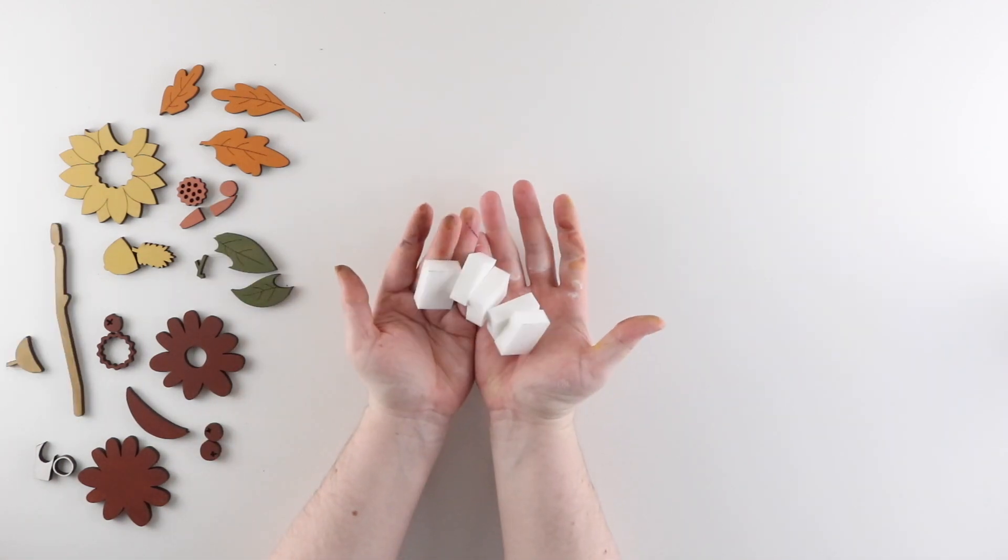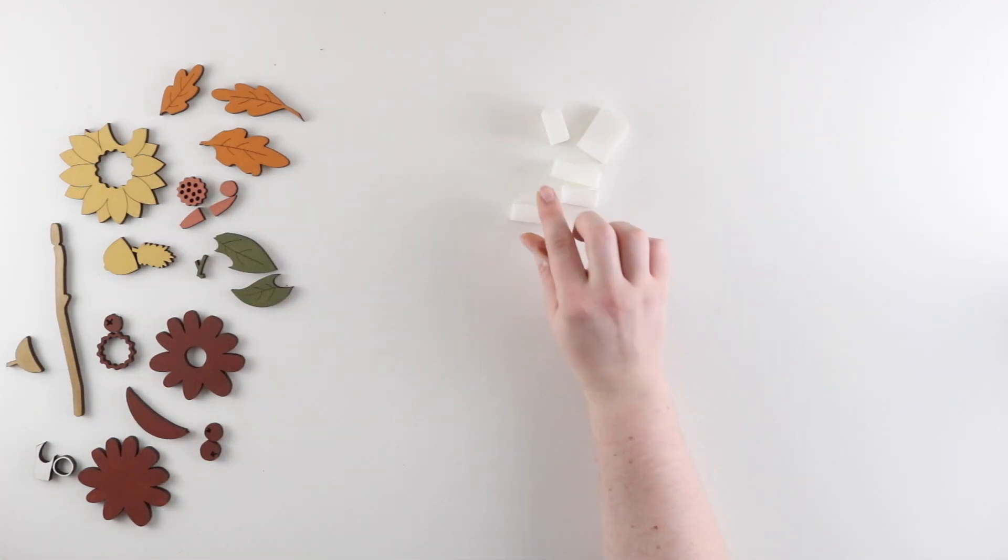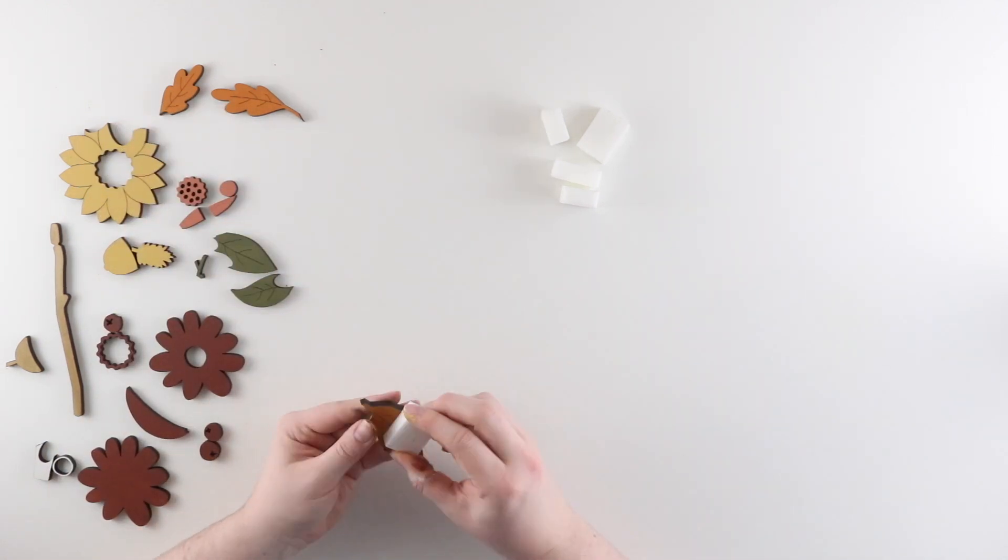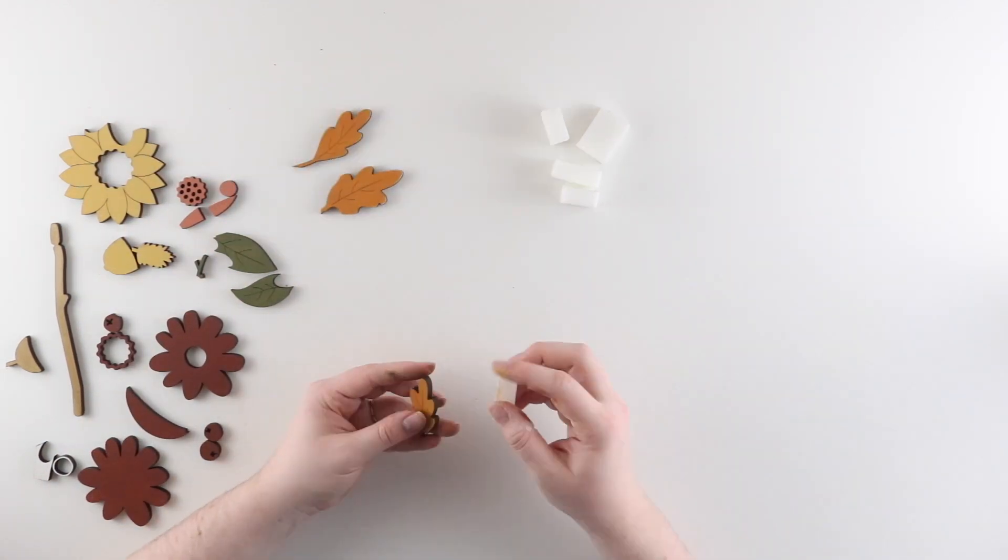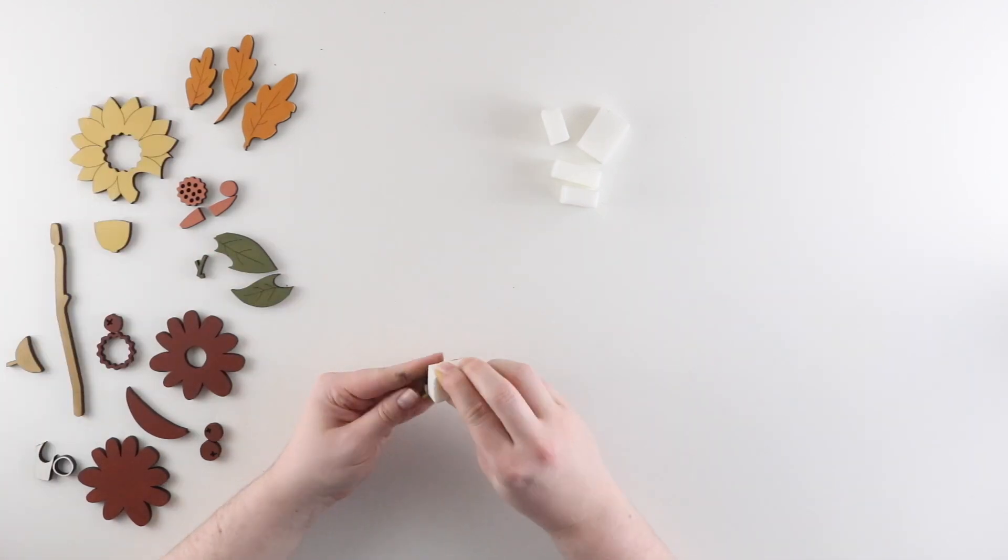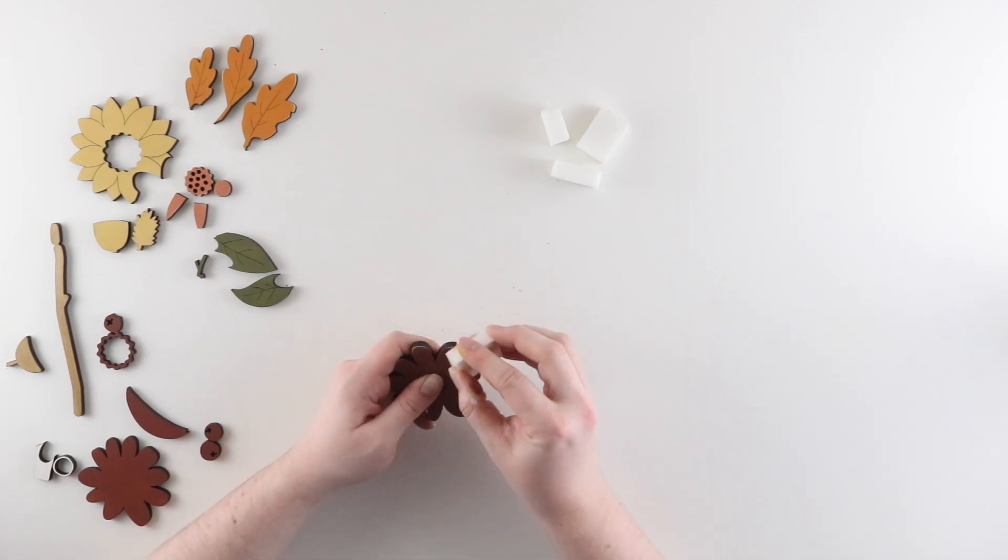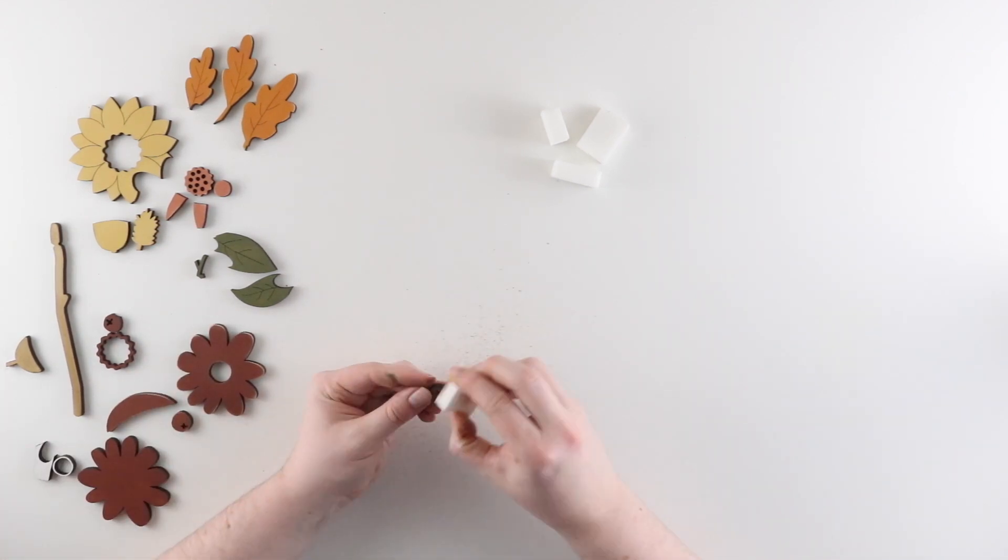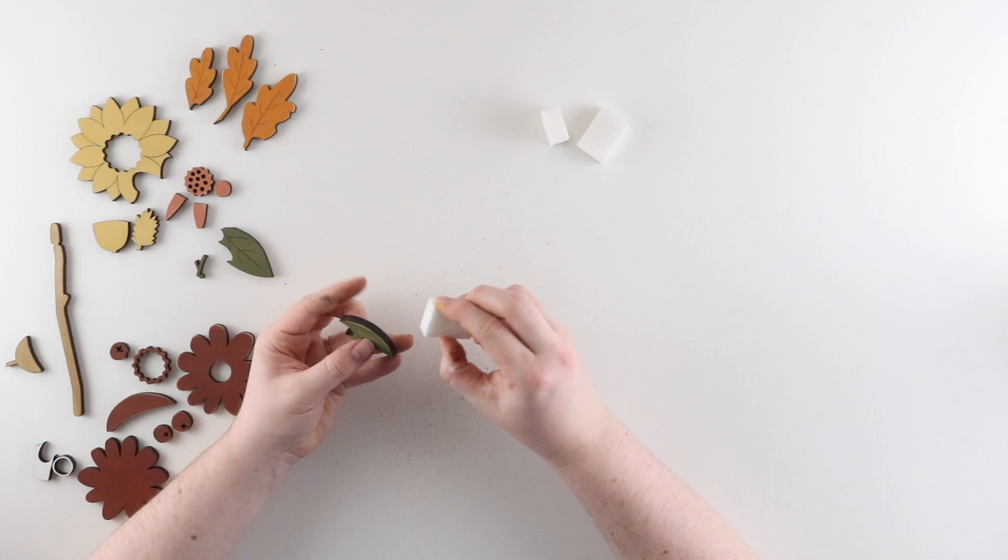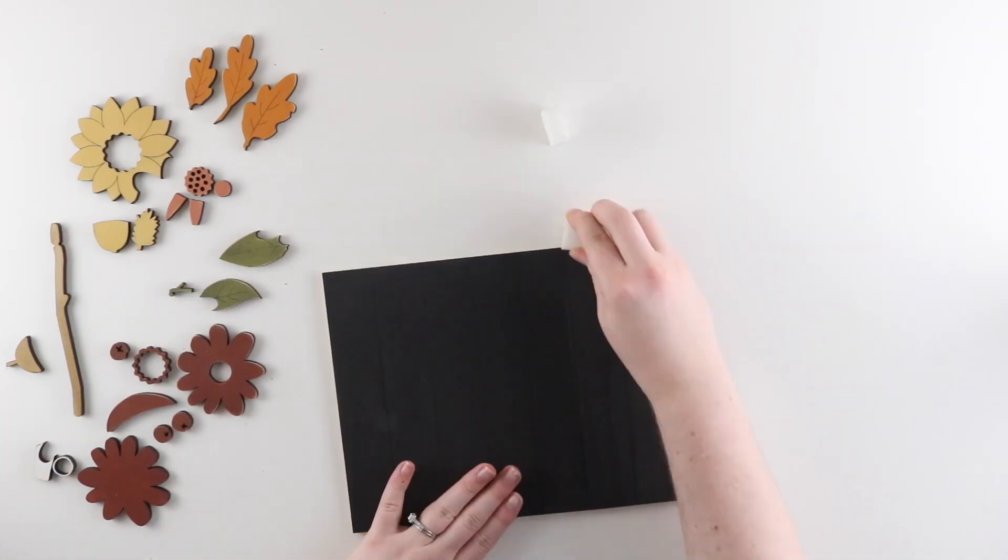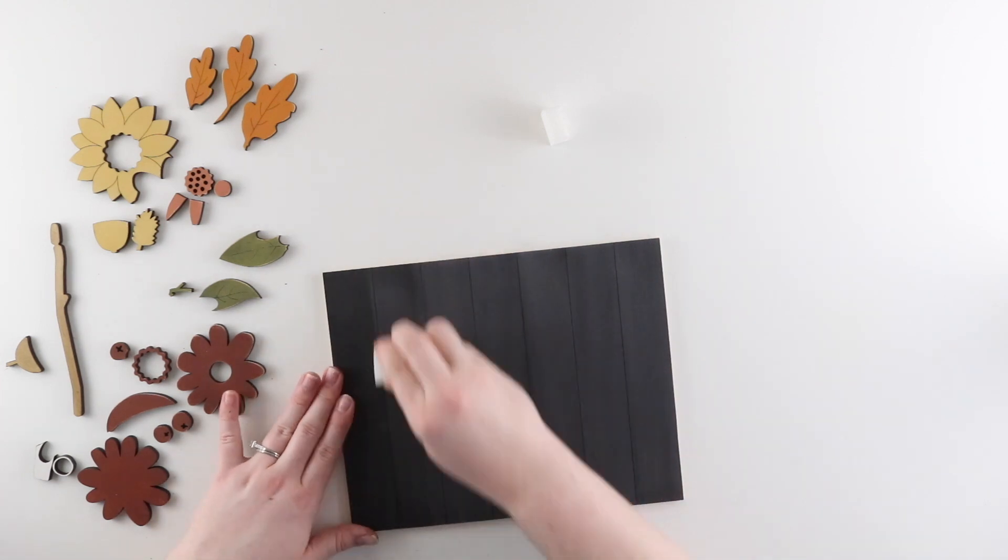Now that everything is painted and dry it's time to give everything a quick sand with the sanding blocks. To smooth out the finish I'm going to use the sanding block flat against the top. And to add a little bit of distressing I'm going to use the sanding block at about a 45 degree angle to remove some of the paint on the edge. To prevent mixing the colors I'm using one side of each sponge for each color. And then once I've used both sides of the sponge I'll switch to a new one.